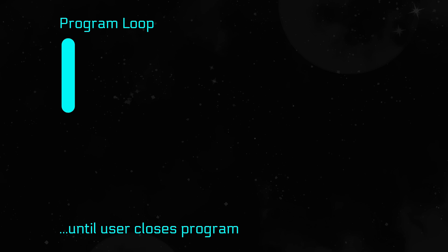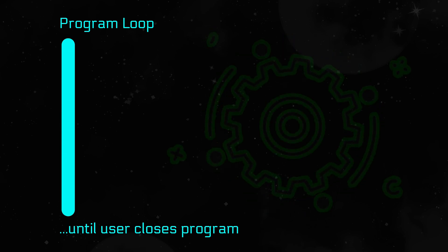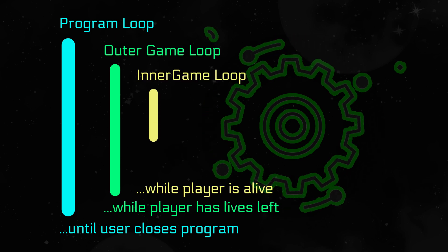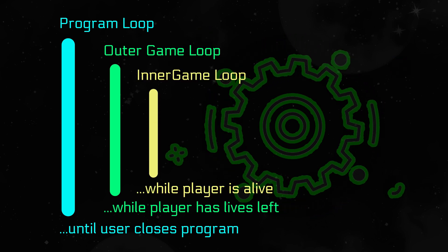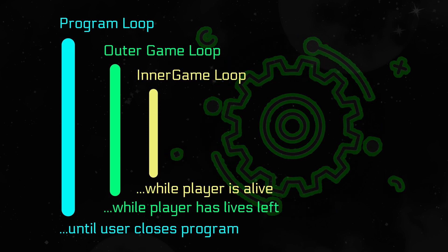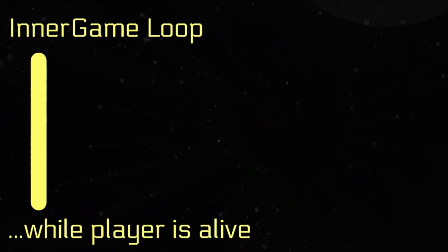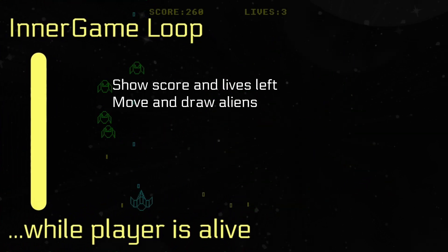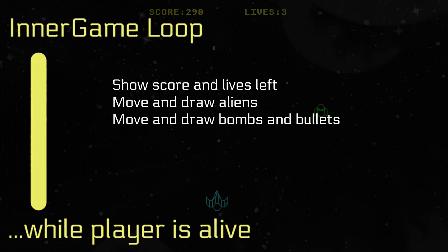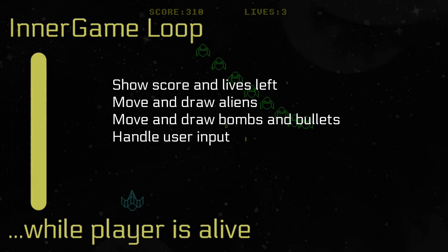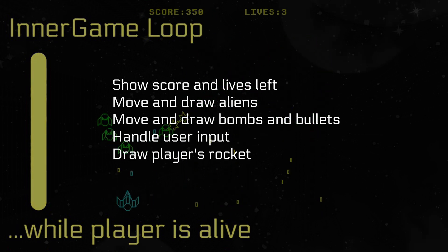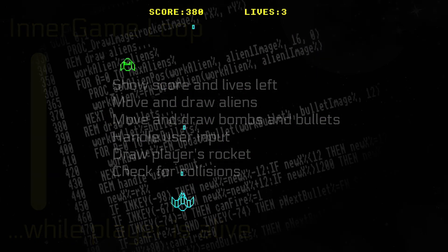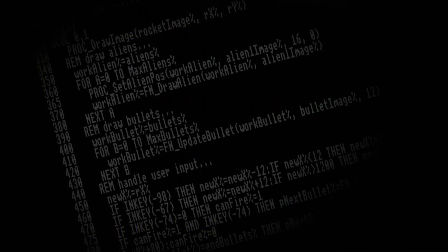There's a program loop that runs until the program is closed. An outer game loop runs while the player has lives left. The inner game loop runs while the player is alive, and this is where the fun stuff happens. We show the score and lives left, move and draw aliens, move and draw bombs and bullets, handle user input, draw the player's rocket and check for collisions. And all of this is written in good old BBC BASIC from the 1980s.